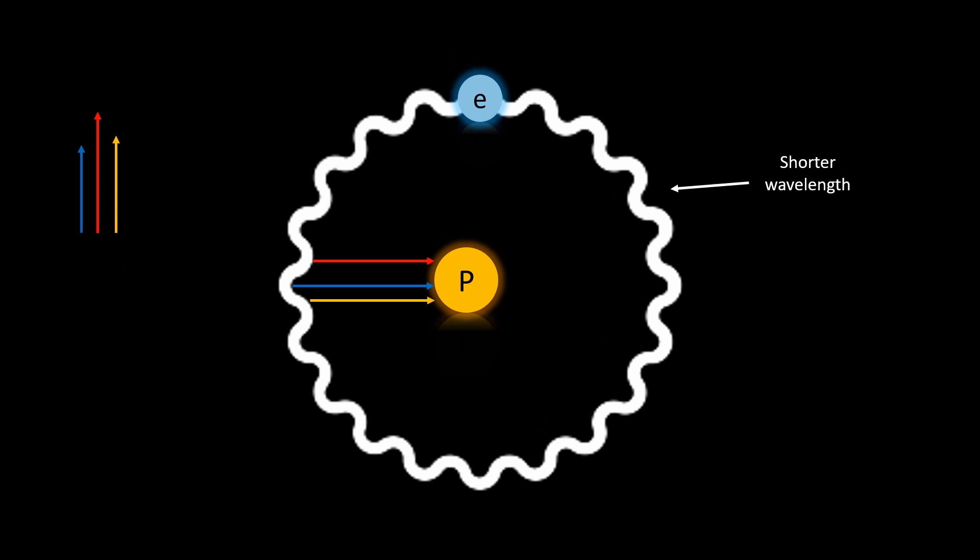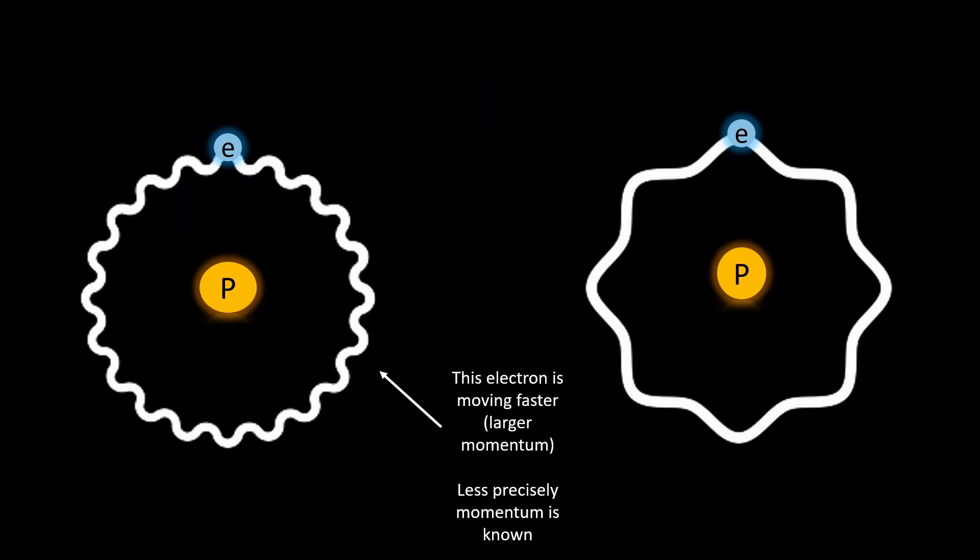So we can't know the exact position, but one solution to increasing the precision is actually exciting it with enough energy that its wavelength is so short, the radius has a lot less variation. The problem with this is that the more energy you give the electron, the greater the momentum change and the less precisely the momentum is known.